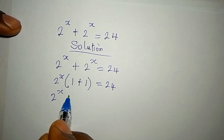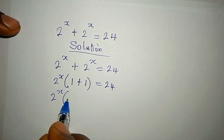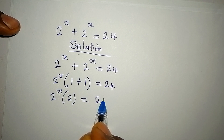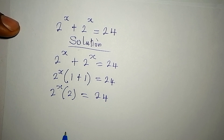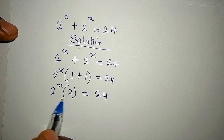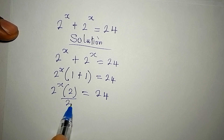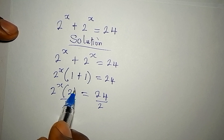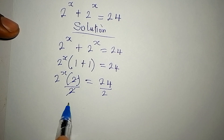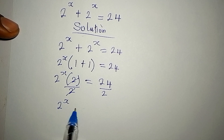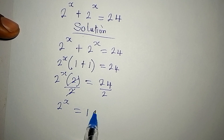2 to the power of x multiplied by 2 is equal to 24. Since we are multiplying these two, we can divide both sides by 2. This cancels, and now 2 to the power of x is equal to 12.